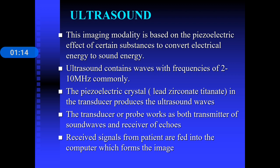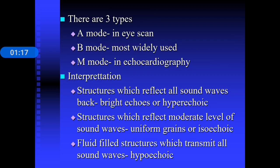The received signals from the patient are fed into a computer which forms the image. There are three types of ultrasound: A-mode, B-mode, and M-mode. A-mode is primarily used as an eye scan. B-mode is widely used in all hospitals and scan centers. M-mode is used in cardiology for echocardiography interpretation.